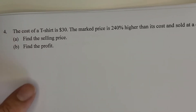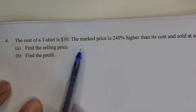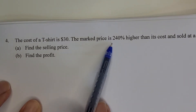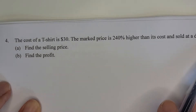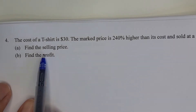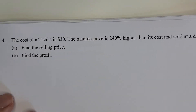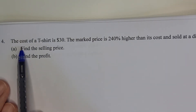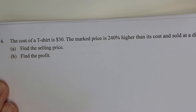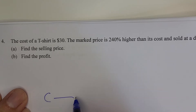Let's move to question number four. The cost of a t-shirt is $30, the marked price is 240% higher than its cost, and it is sold at a discount of 10%. Part a: find the selling price. Part b: find the profit. When a question involves cost price, mark price, and selling price, write down the CMS model.